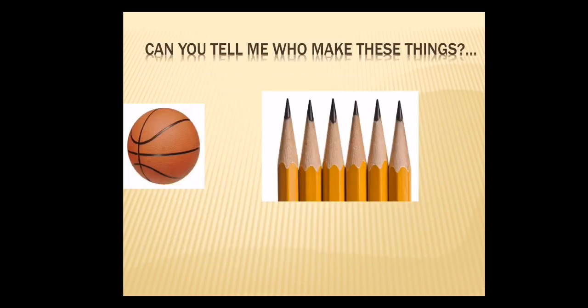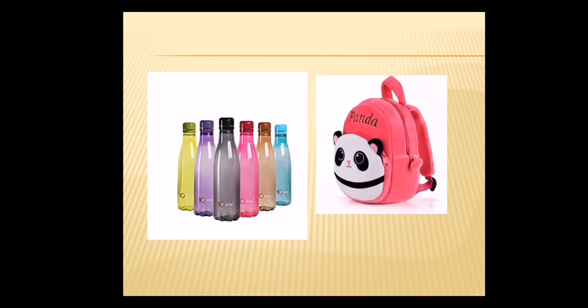Can you tell me who makes these things? Ball — who makes these things? Yes, human. See the second picture — pencils. Who makes these things? Yes, human. Now see this picture: water bottles, then bag. These things are made by human. That's why it is called a man made thing.